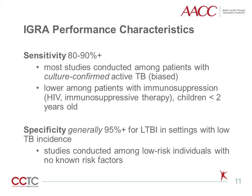Studies examining IGRA performance have shown that IGRA generally performs well in most people for detection of TB — 80 to 90 percent or more sensitive, and 95 percent or more specific. However, it is important to keep in mind that these studies and their estimates are imperfect. Because there is no gold standard for diagnosing latent TB infection, studies have relied on surrogates for latent TB infection.